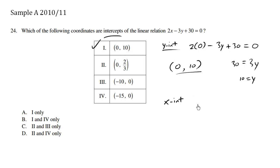Let's find the x-intercept. To find the x-intercept, we set the other variable to 0. We're going to set y equals 0. So looking here at this equation, we have 2x minus 3y, which happens to be set to 0, plus 30 equals 0.